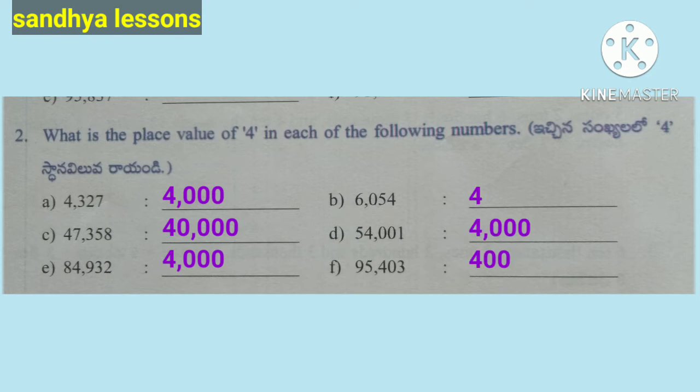Second: What is the place value of 4 in each of the following numbers? Place value of 4 in 4,327: 4 is in the thousands place, so 4 × 1,000 = 4,000. Place value of 4 in 6,054: 4 is in the ones place, so 4 × 1 = 4. Place value of 4 in 47,358: 4 is in the ten-thousands place, so place value is 40,000.